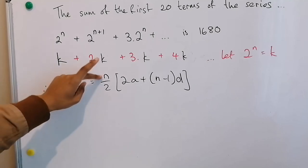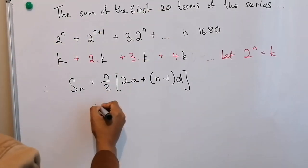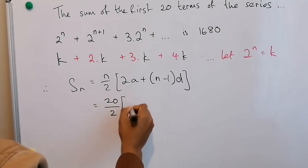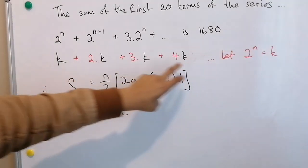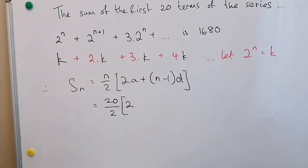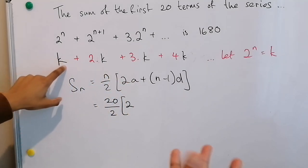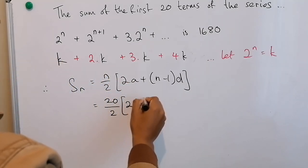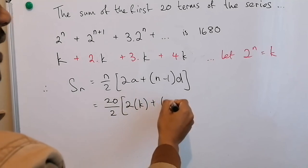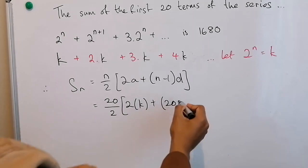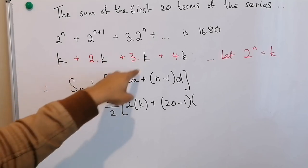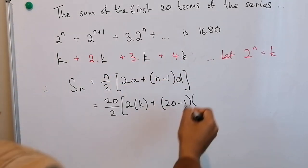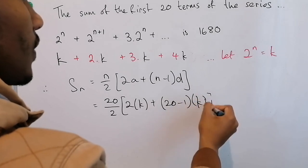n is the number of terms, which is 20. This is not the same n that we're trying to calculate. Remember that n that we're trying to work out is hidden within the k. So let's first solve k and then we'll get the n. So a is the first term, which in this case is k. n is the number of terms, which is 20. The difference we said was k, because each time you're just adding k, we're just adding that 2 to the power of n.